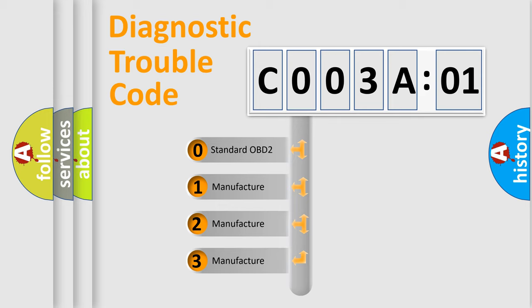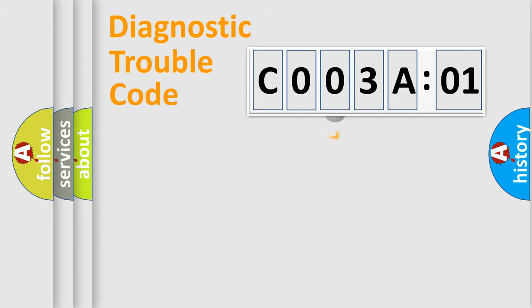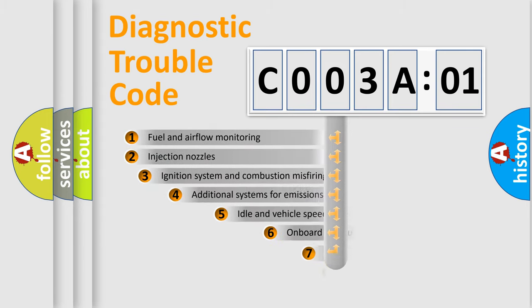If the second character is expressed as zero, it is a standardized error. In the case of numbers 1, 2, or 3, it is a manufacturer-specific expression of the car-specific error.